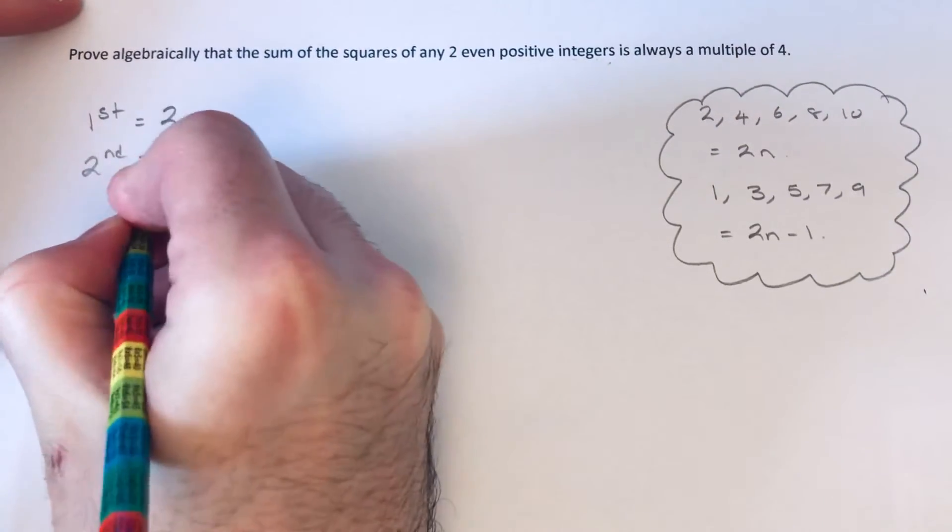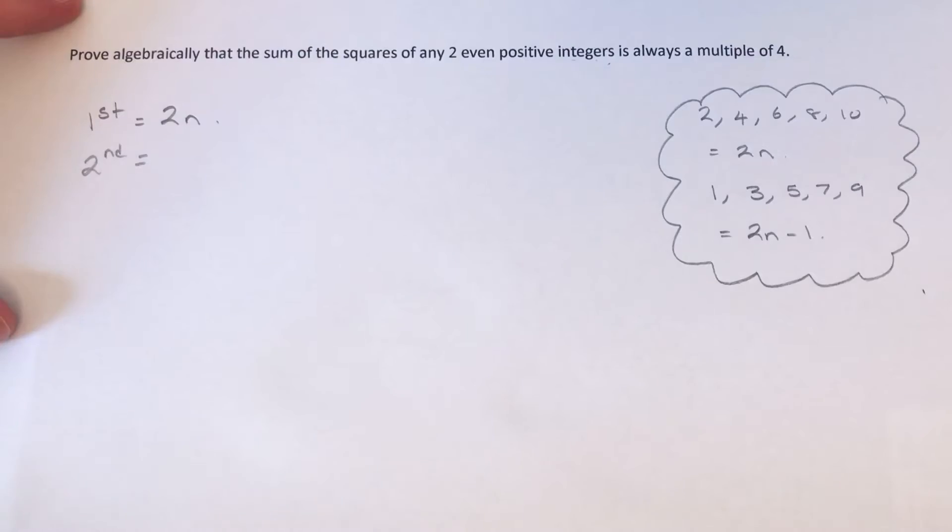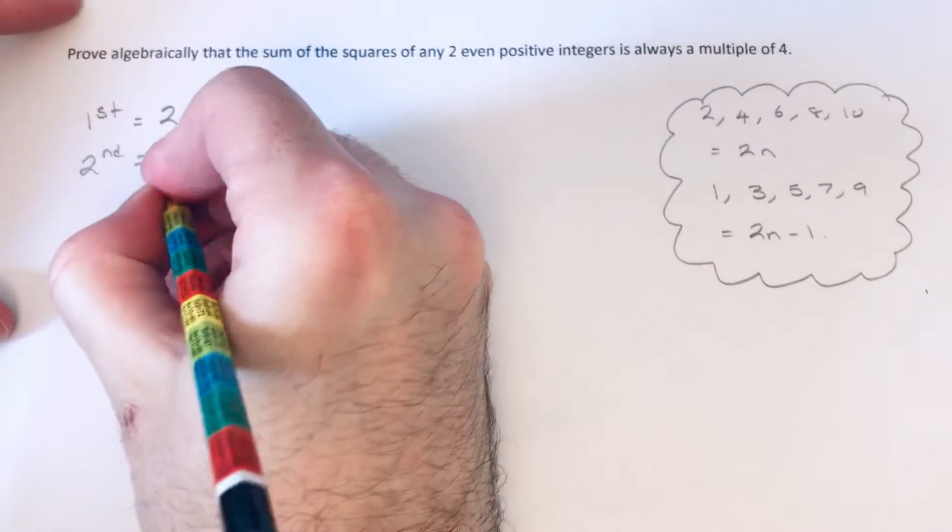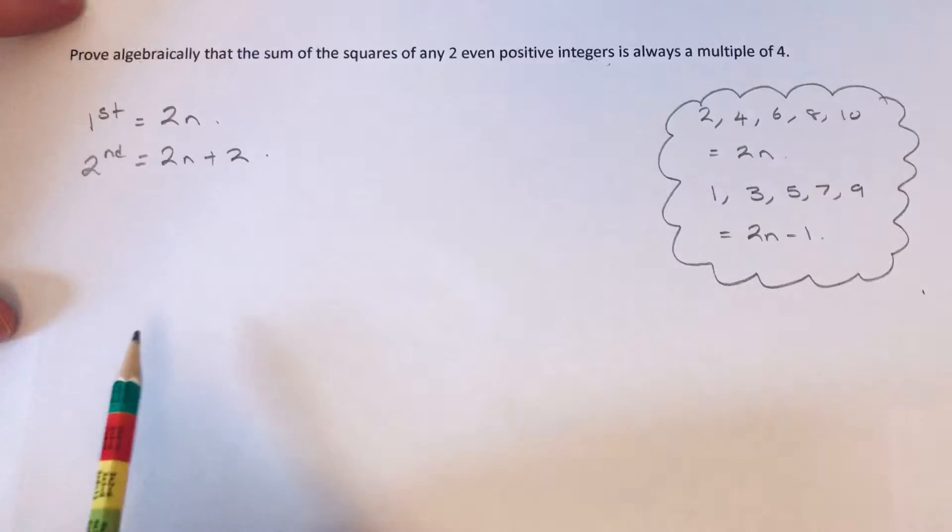And let's call our second one. So I'm just going to add 2 onto that first one, so that's 2n plus 2.